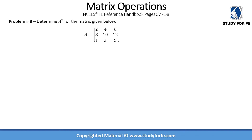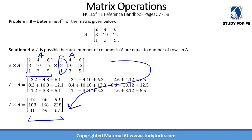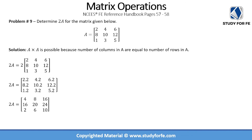Problem eight asks us to determine the square of a given matrix. The square of a matrix is found by multiplying the matrix by itself, treating both copies as separate matrices and going through the same multiplication process. Problem nine asks us to determine 2 times A for a given matrix. Whenever a scalar is multiplied by a matrix, you simply multiply that scalar with every single entry in the matrix to get the product.